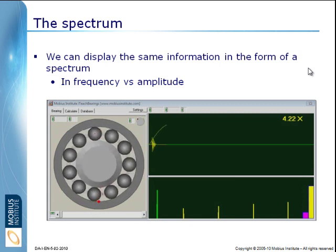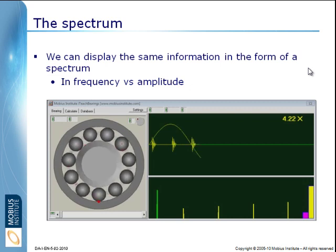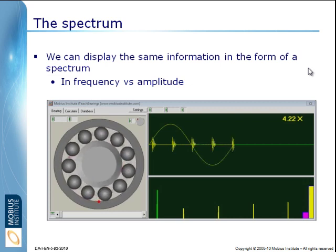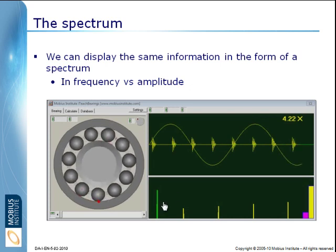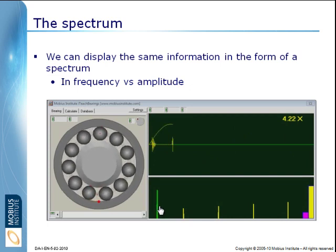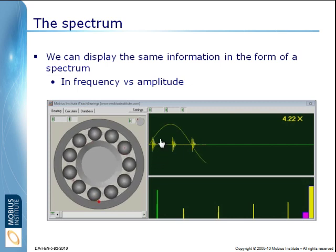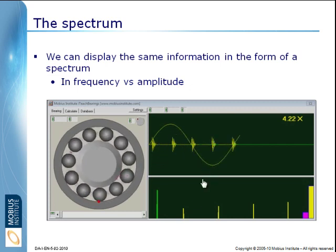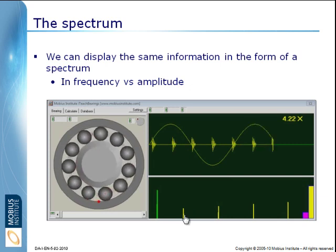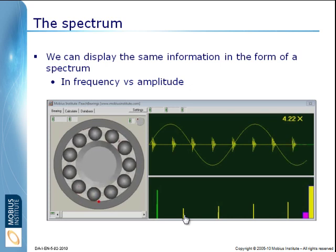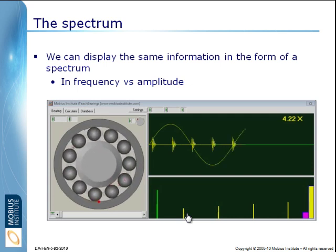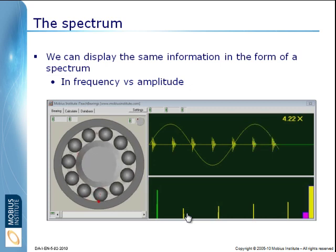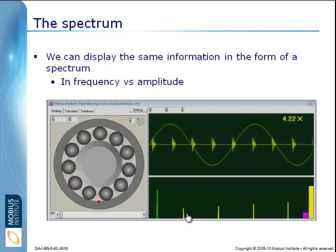This brings us to the second way we can talk about this information. We can present the same information in something called a spectrum — a plot of frequency versus amplitude. The green peak coincides with the shaft rate. The yellow peaks coincide with the rate of the balls hitting the fault on the outer race. These other yellow peaks are called harmonics — multiples of the first one — and all of them are related to the rate at which that outer race defect is getting struck by the balls.